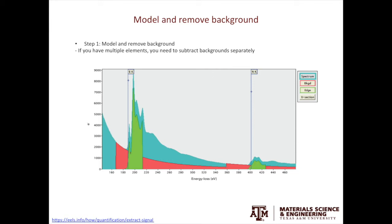The example here is boron nitride. It is intuitive to do the background removal for boron, but for nitrogen you have to do a separate background removal.